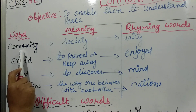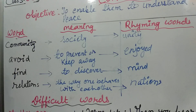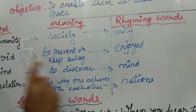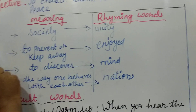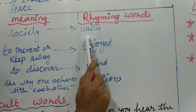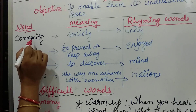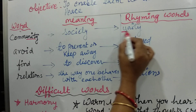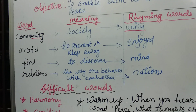Community — community means a society where a group of people lives together. And what is the rhyming word for community? That is unity. So here we can find: community and unity — they are rhyming with each other.